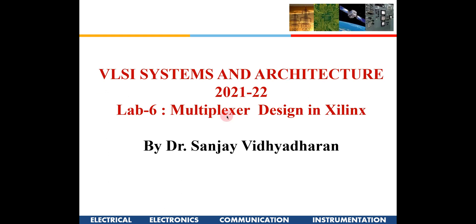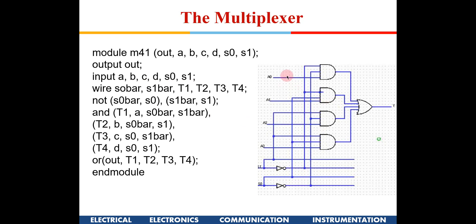In today's lab lecture, we are going to see how to implement a multiplexer in Xilinx and also use a multiplexer to implement a full adder. A four-to-one multiplexer has four inputs and one output, requiring two control signals. If the control is zero-zero, the inverted outputs activate this AND gate, so input A zero is routed towards the output.